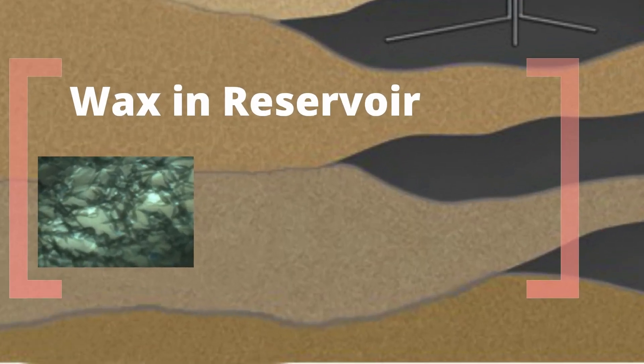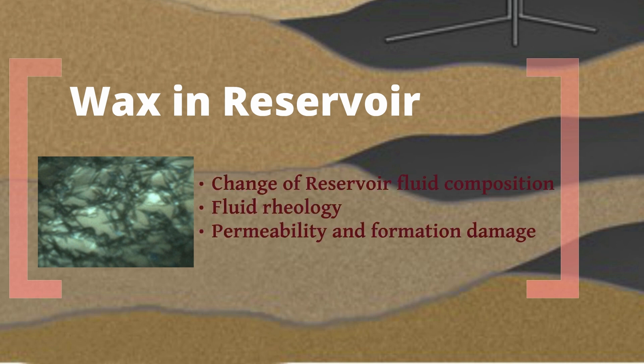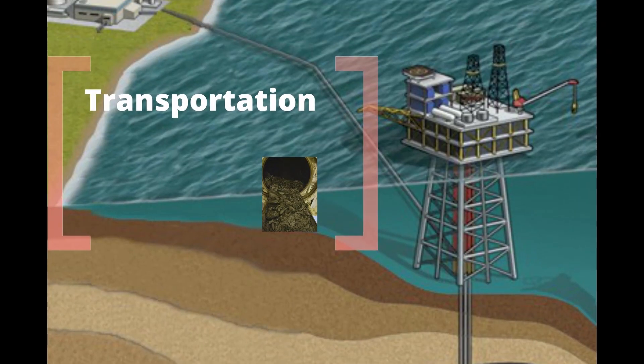Wax deposition is a problem in all steps of the petroleum industry, starting from the production. Any facilities at low temperature, any cold point, are vulnerable to a deposition of paraffin and could lead to a potentially expensive event. Most of the problem can be found during oil transportation. The presence of deposited waxy solids can lead to partial or complete blockage of pipelines and other equipment involved. In a subsea pipeline, consequence of wax deposition leads to a variety of challenges with increased viscosity or pressure drop.